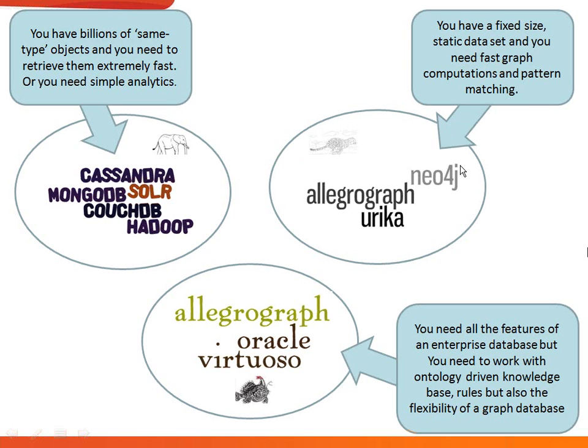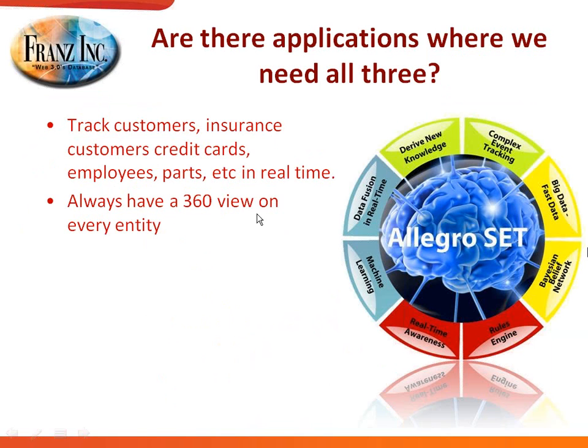If you have a fixed-size, steady data set and need fast graph computations and pattern matching, then something like Neo4j, AllegroGraph, or Cray Urika might work better for you. And if you need all the features of an enterprise database with an ontology-driven knowledge base and rules, but also the flexibility of a graph database, then you probably want a triple store like AllegroGraph, Oracle, or Virtuoso. This is a rough overview of when to use which type.